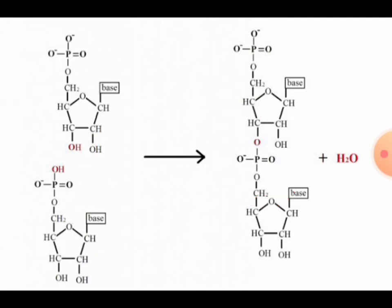I will repeat: the hydroxyl group present at the third carbon atom of one nucleotide and the hydroxyl group present at the fifth carbon atom of another nucleotide interact, release one water molecule, and form a bond. That bond is called the phosphodiester bond.